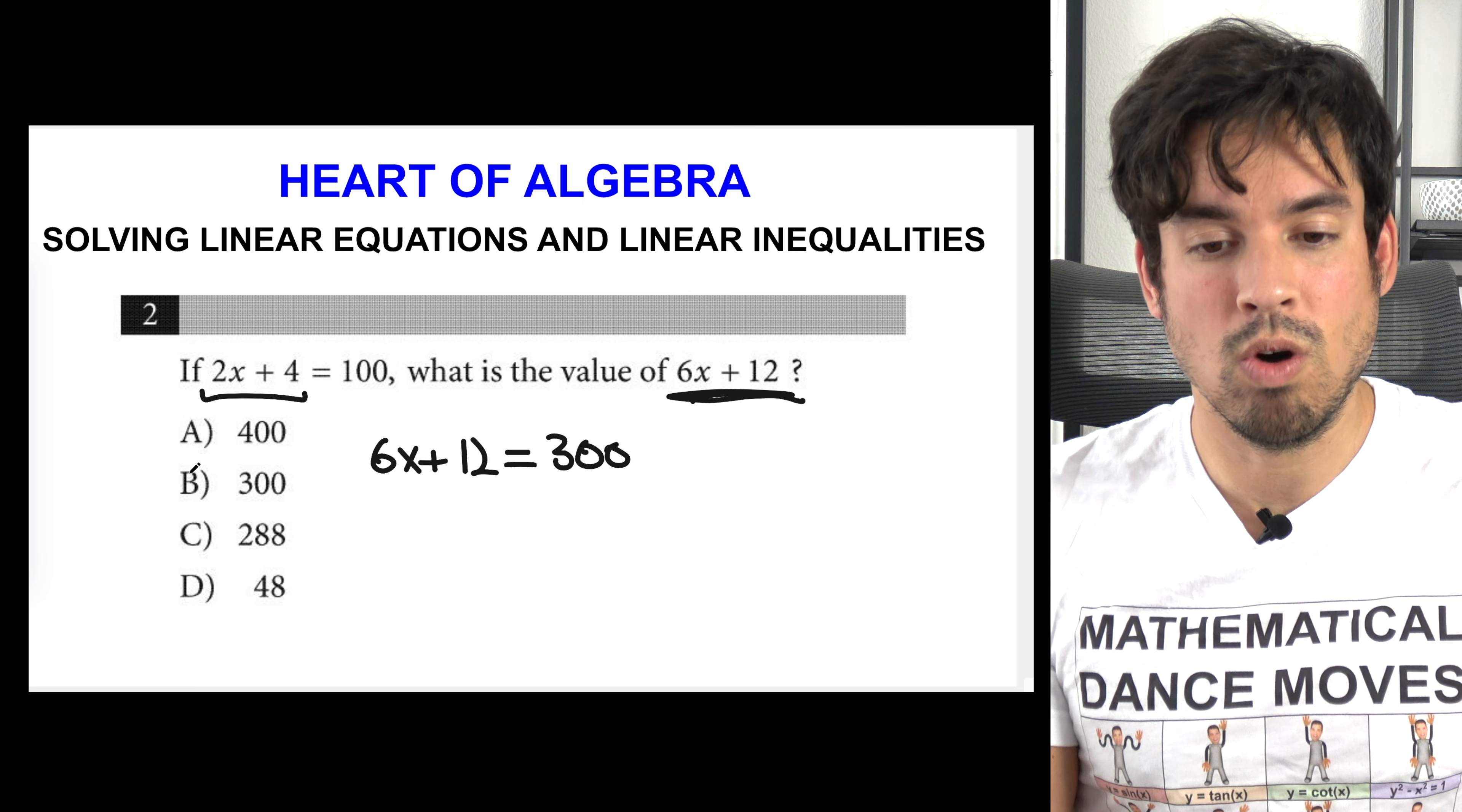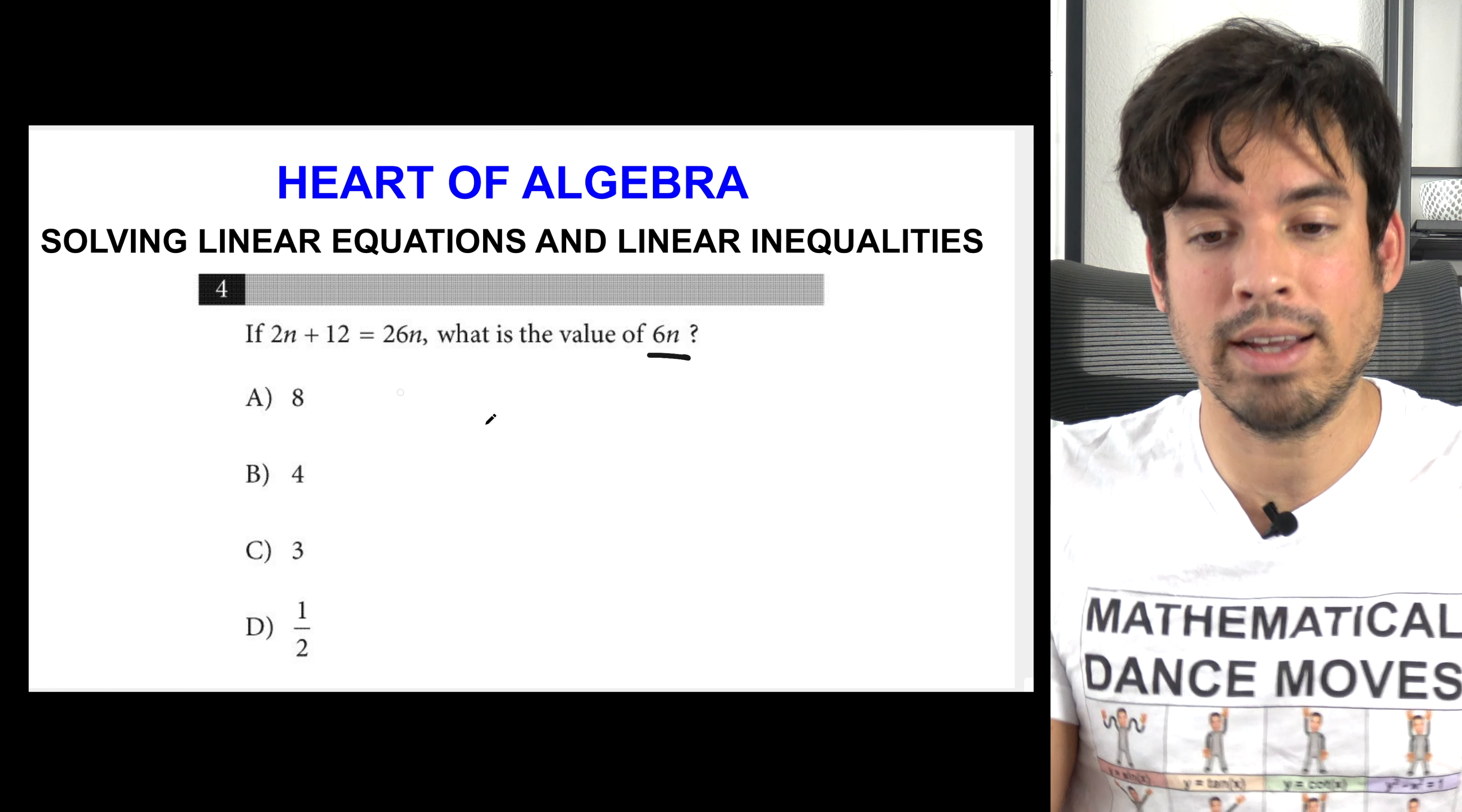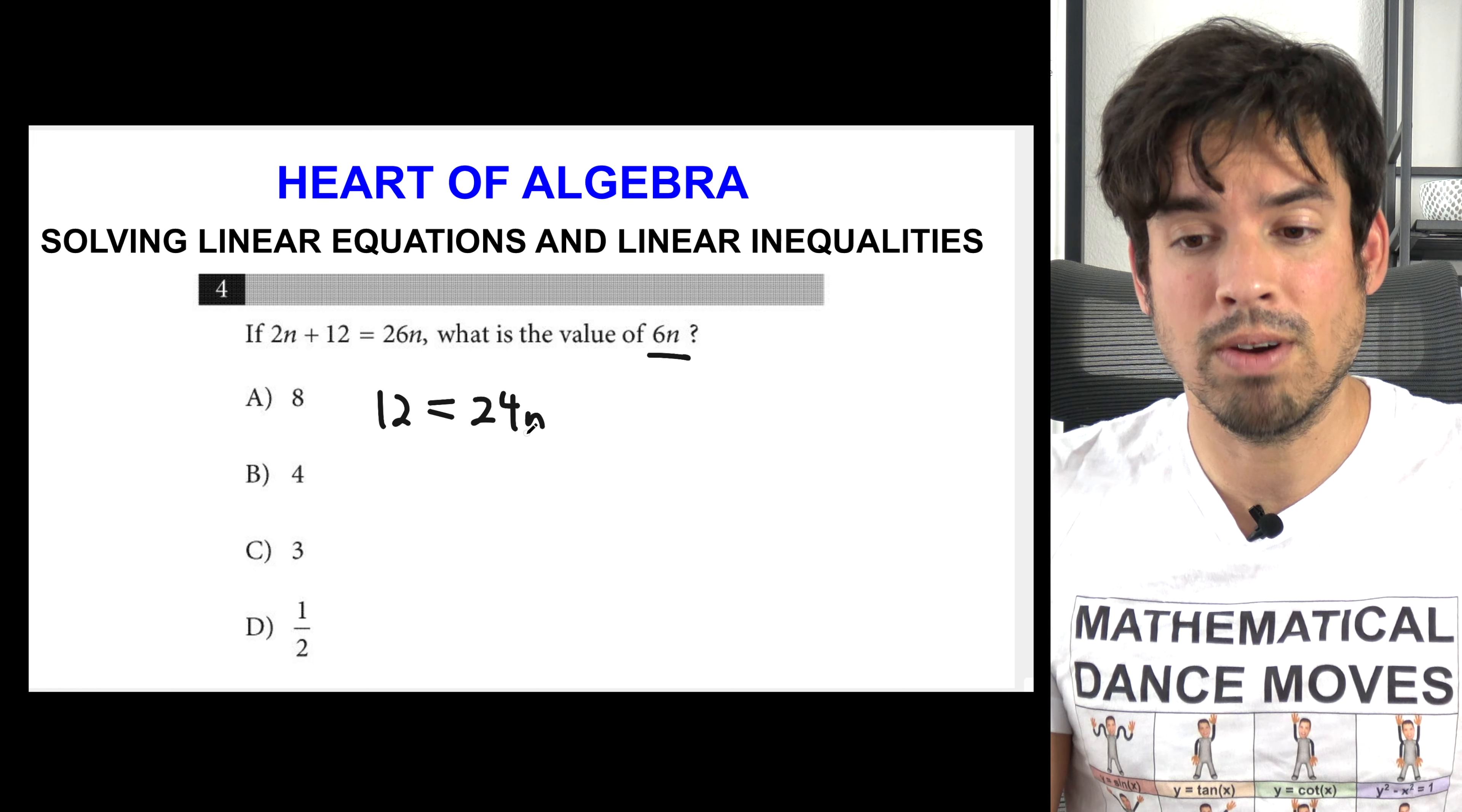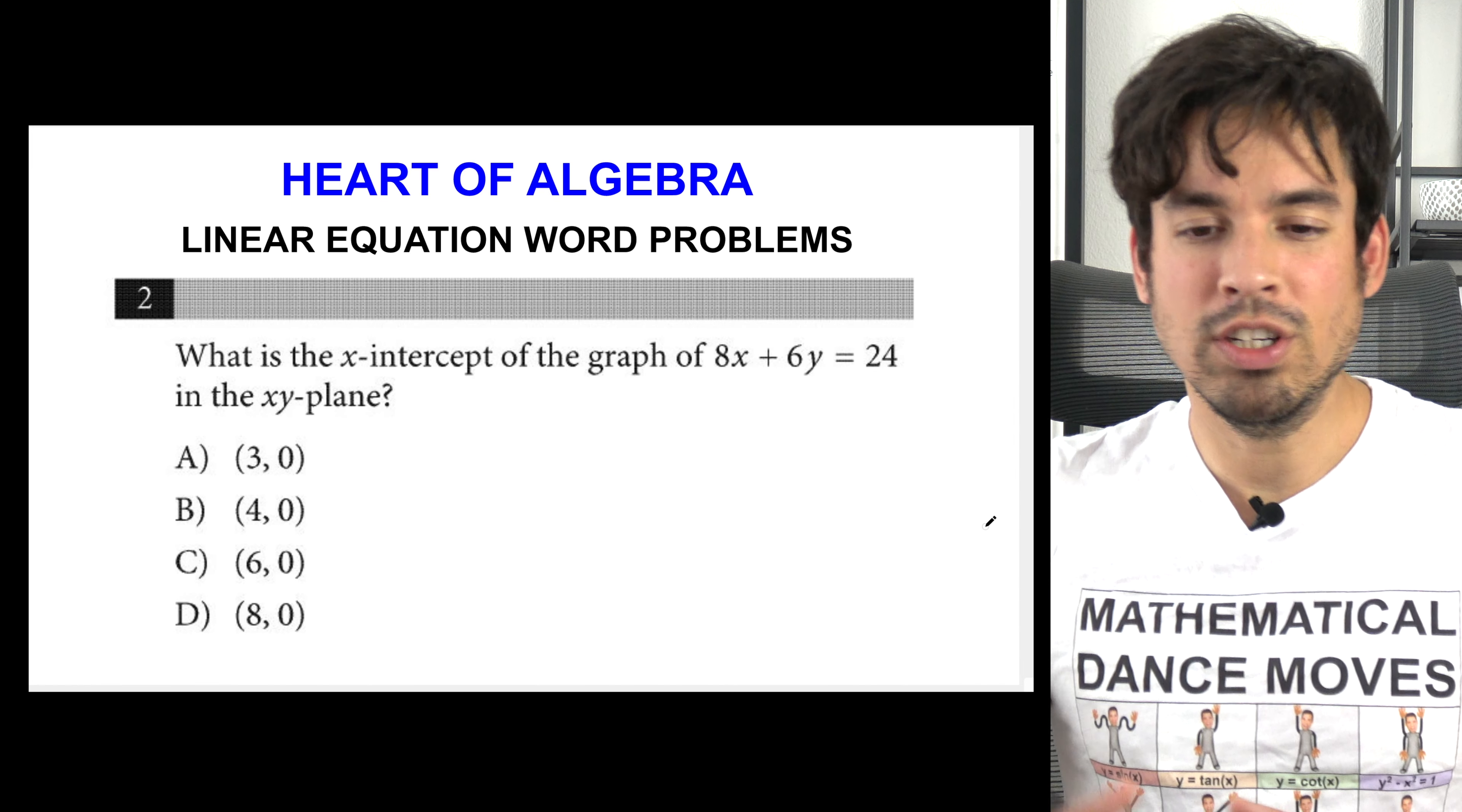In this next question we have something similar as the last. Once again they're asking for the value of 6n, meaning don't spend your time trying to get n, we can just solve for 6n. So first I'm going to subtract 2n from both sides and I get 12 equals 26 minus 2 is 24. And now again, you divide by 24 and solve for n. Instead I'm going to divide both sides by 4 and that's going to give me 3 equals 6n and boom, done.